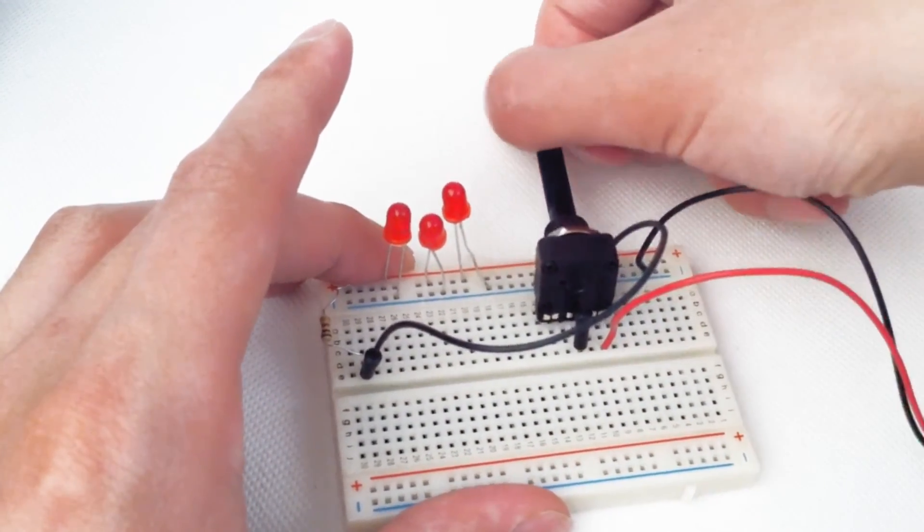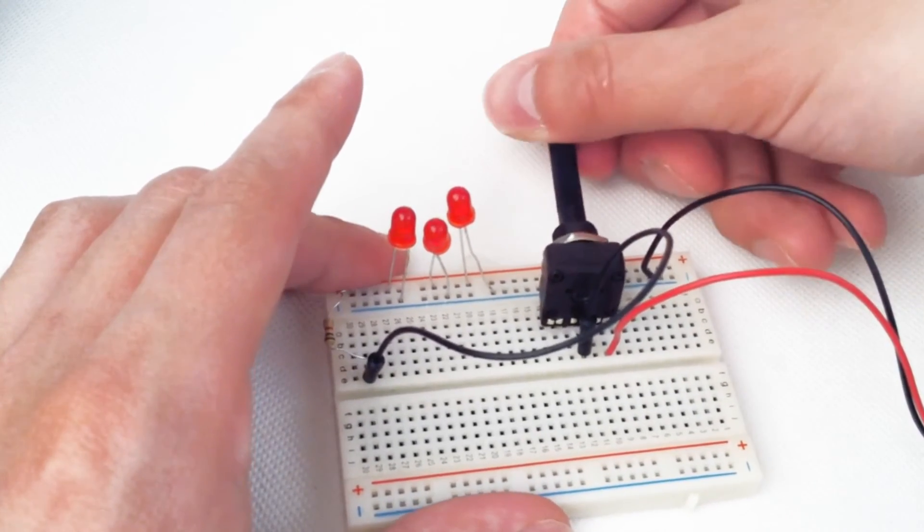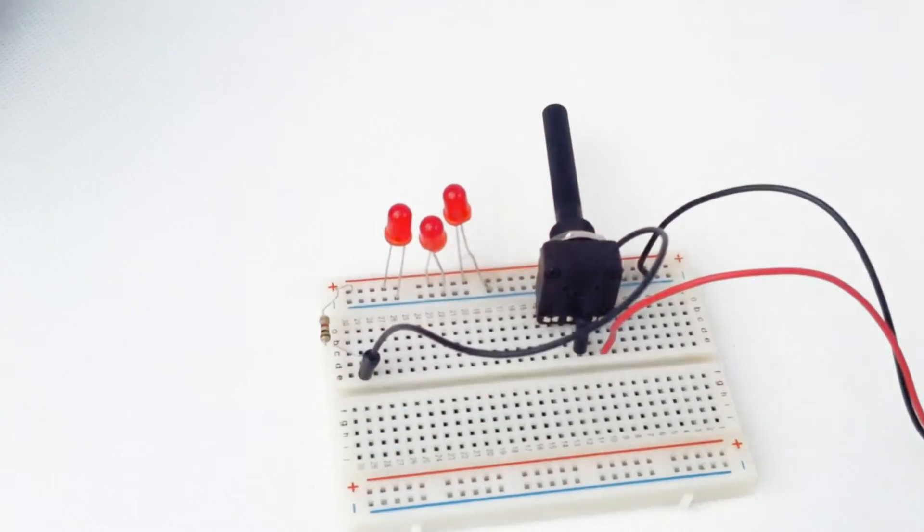You can see if we turn the potentiometer up and down, we get the LEDs glowing more or less brightly. If we turn off the light, you can see that better.